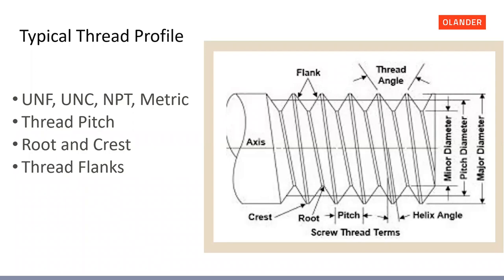At the same time in the United States, there was another gentleman named William Sellers who in 1864 proposed a 60-degree thread angle with sharp roots and crests, which made it easier to produce. Fast forwarding to 1948, when they needed one standard, they decided to go with the Sellers model because it was cheaper and easier to produce. That became the UNF, UNC, and NPT standards that we work with today.